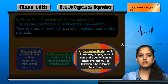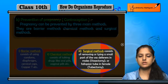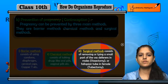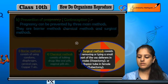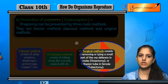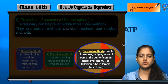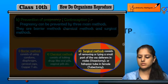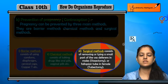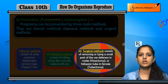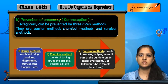Third hai surgical methods. Surgical method mein kya hai - removing or tying a small part of vas deferens in males. Males ke andar agar vas deferens ka kuch chota portion remove kar dein - jise vasectomy kehte hain - in dono processes se fusion ki process nahi hogi, aur ultimately pregnancy can be avoided. So this is all about this chapter, how do organisms reproduce. Thank you.